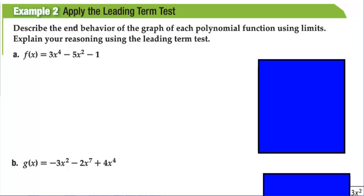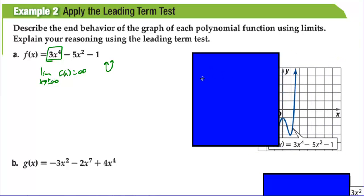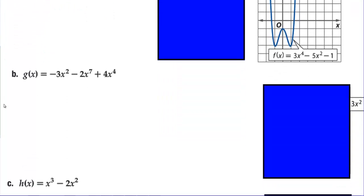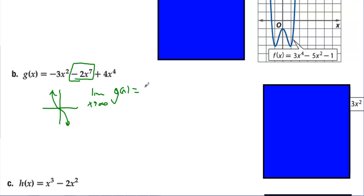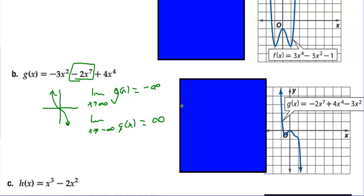Applying those rules to describe end behavior: for example (a), the leading term has a positive coefficient and even degree, so it behaves like x² — the limit as x → ±∞ is positive infinity, going up on both sides. For example (b), the leading term — which isn't listed first, so identify the highest degree — has a negative coefficient and odd degree. That looks like −x³, so the limit as x → ∞ is −∞ and the limit as x → −∞ is +∞, matching the graph.